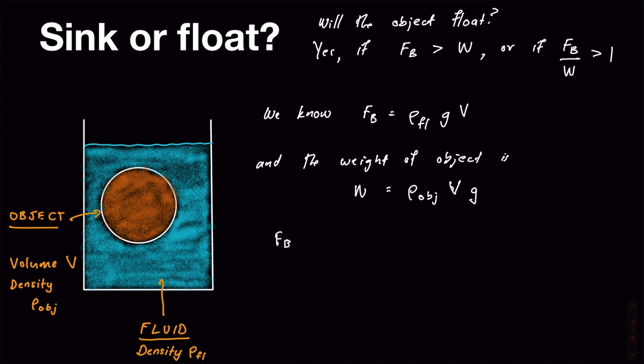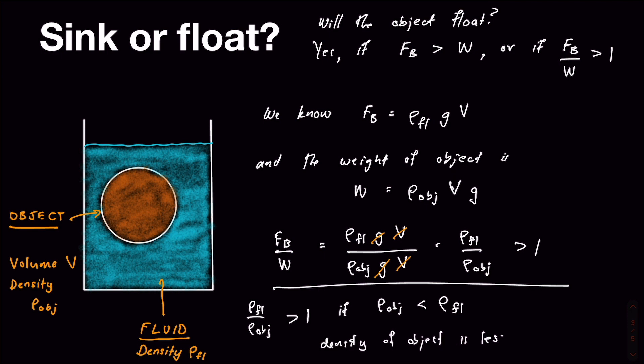So if we go and work out what Fb over W is using those two terms, Fb over W is just going to be density of fluid times g times V, divided by density of object, times g times V. And you can see that in this equation, the whole of the terms are just going to cancel out. And so that just equals the density of the fluid over the density of the object. And we're trying to see whether that is going to be greater than one. So this is, if we look at that now, this says that this thing is greater than one, if basically if the thing on the bottom of the fraction is smaller than the thing on the top. So if the density of our object is less than the density of our fluid. So I can say that in words as well, if density of object is less dense, is less than that of fluid.